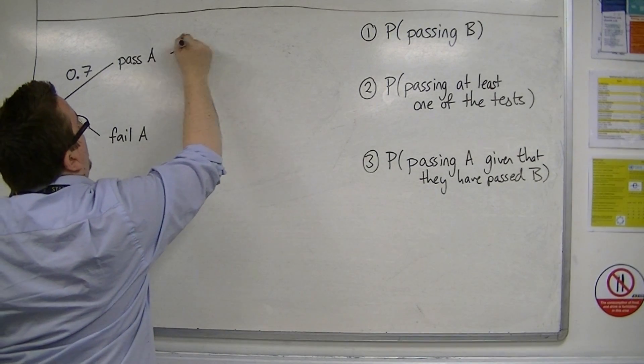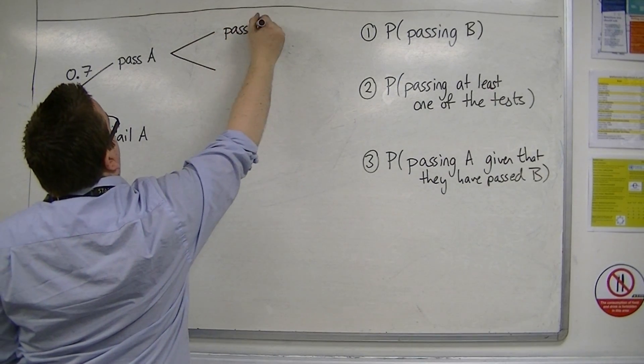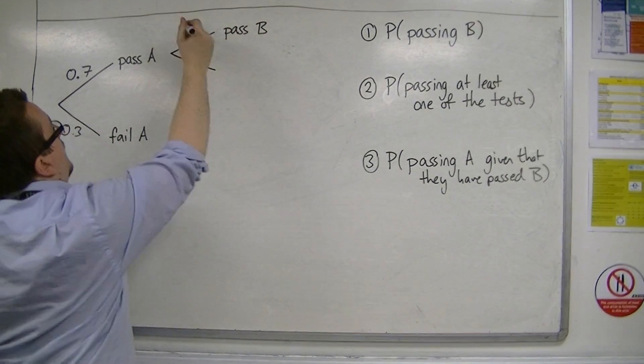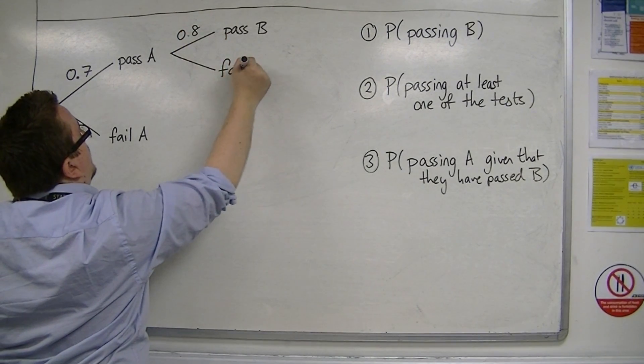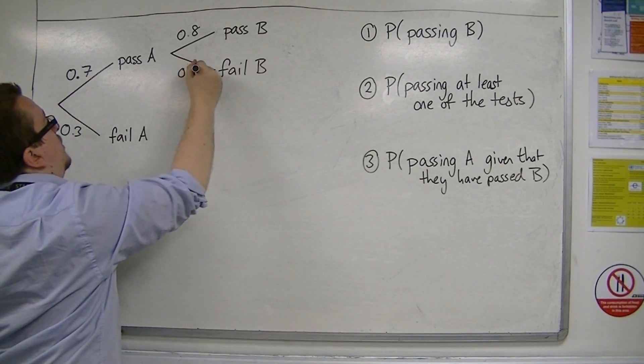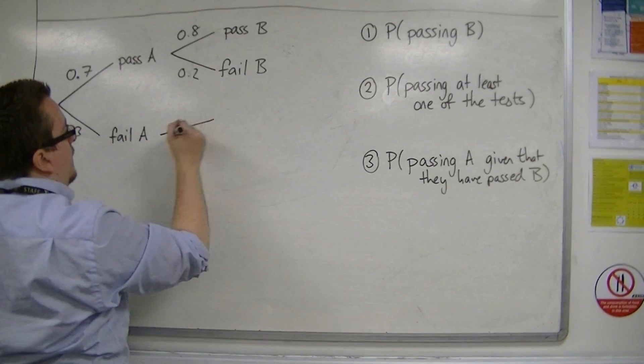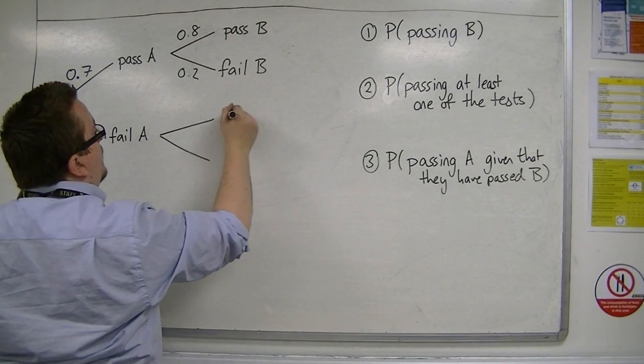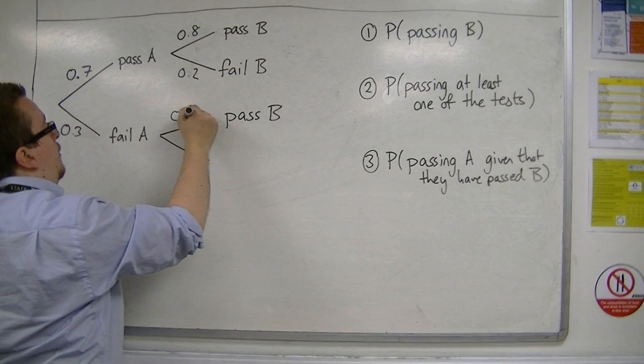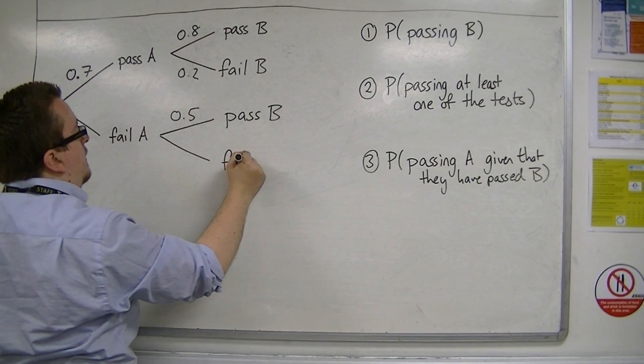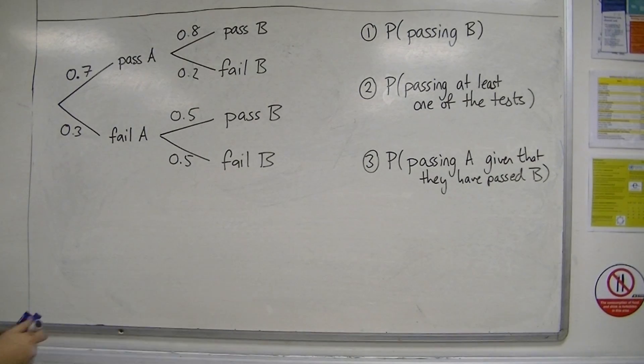Given that they have passed A, the probability of passing test B is 0.8, and failing B is 0.2, because these must add up to 1. Given that they failed A, the probability of passing B is 0.5, and failing is also 0.5.